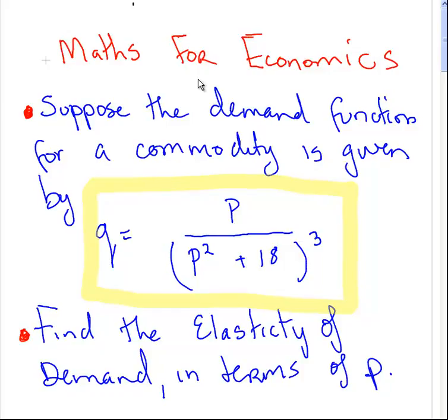So, suppose the demand function for a commodity is given by this expression here: Q equals P over P squared plus 18, all cubed. Find the elasticity of demand in terms of P.